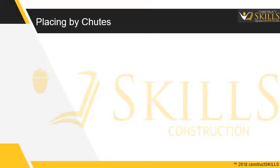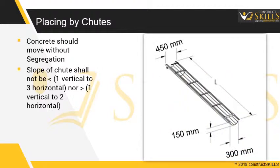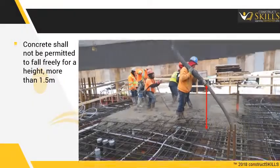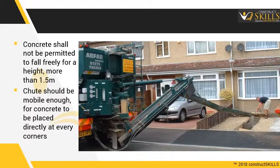When placing by chutes, concrete should move without segregation. The slope of the chute shall not be less than one vertical to three horizontal, nor more than one vertical to two horizontal. No water shall be added at any point of the chute system to facilitate movement of concrete. Use drop chutes if vertical drops are higher than 1.5 meters. Chutes should be mobile enough for concrete to be placed directly at every corner.